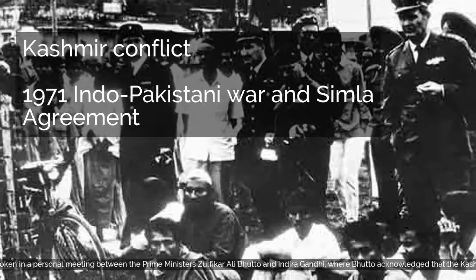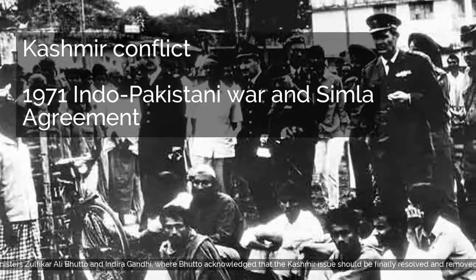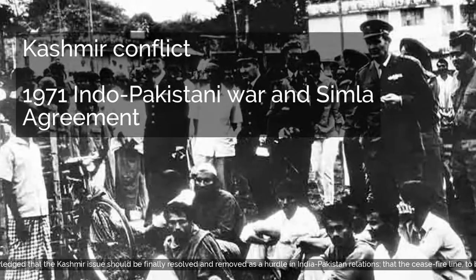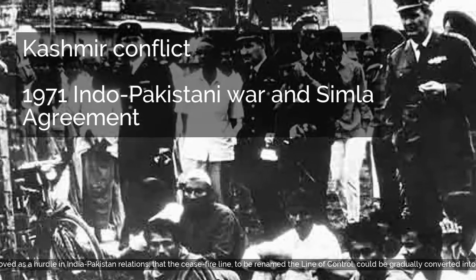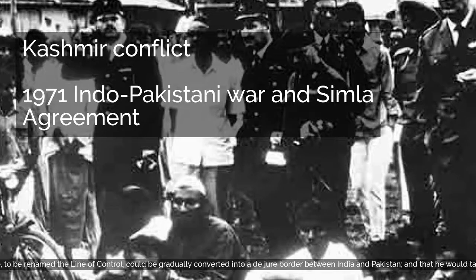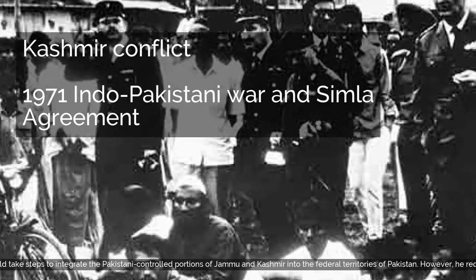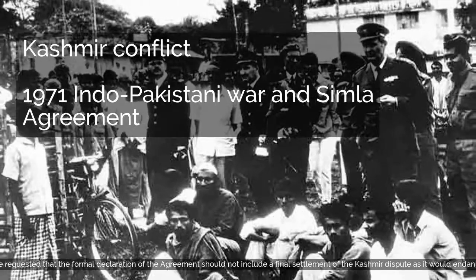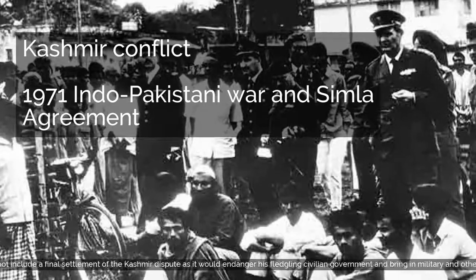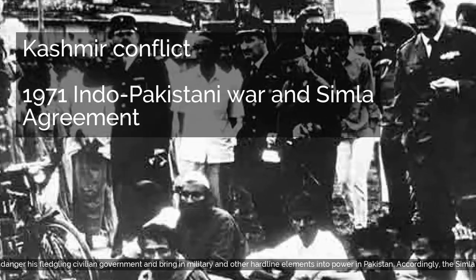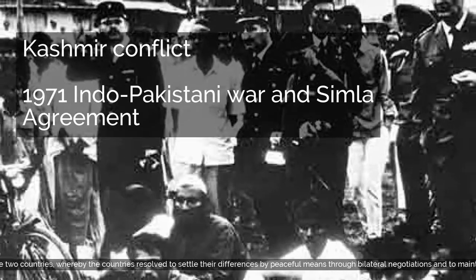The deadlock was broken in a personal meeting between Prime Ministers Zulfikar Ali Bhutto and Indira Gandhi, where Bhutto acknowledged that the Kashmir issue should be finally resolved and removed as a hurdle in India-Pakistan relations; that the ceasefire line — to be renamed the line of control — could be gradually converted into a de jure border between India and Pakistan; and that he would take steps to integrate the Pakistani-controlled portions of Jammu and Kashmir into the federal territories of Pakistan. However, he requested that the formal declaration should not include a final settlement of the Kashmir dispute, as it would endanger his fledgling civilian government and bring military and hardline elements into power in Pakistan. Accordingly, the Simla Agreement was formulated and signed, whereby the countries resolved to settle their differences by peaceful means through bilateral negotiations and to maintain the sanctity of the line of control. Multilateral negotiations were not ruled out but were conditional upon both sides agreeing to them.